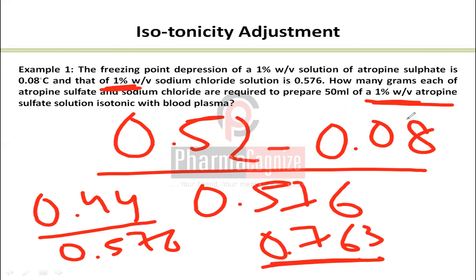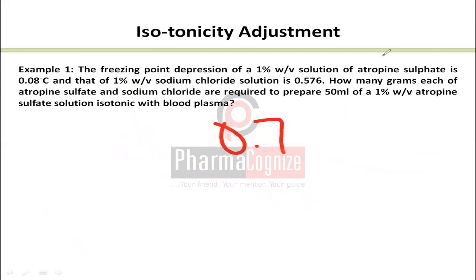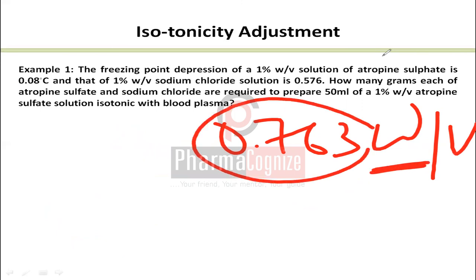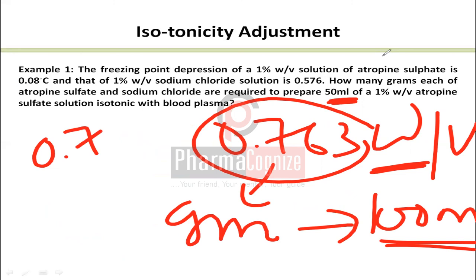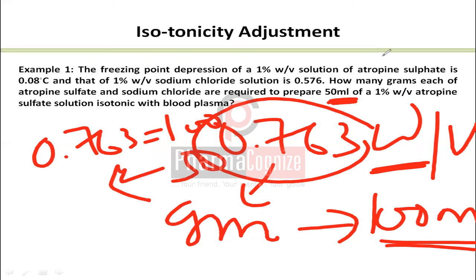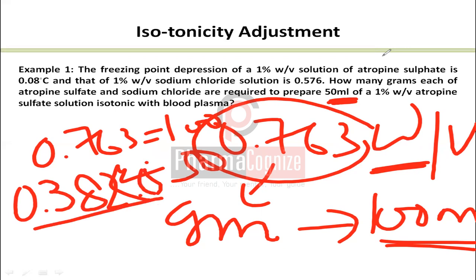Since we need to prepare only 50 mL of solution instead of 100 mL, we halve the result: 0.763 ÷ 2 = 0.382 grams of NaCl. So we need 0.382 g of NaCl for the 50 mL preparation, along with 0.5 g of atropine sulfate for the 1% w/v concentration.